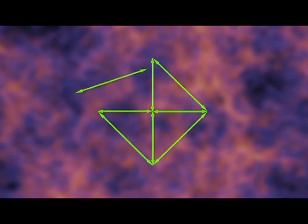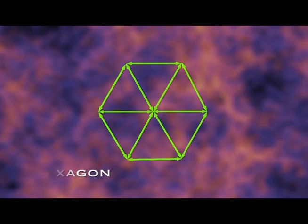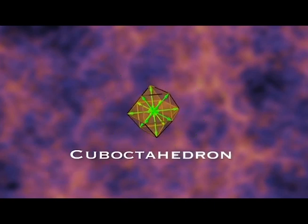Fuller realized that the edge vectors and the vectors to the center have to be the same distance. This creates a hexagon, or in three dimensions, a cuboctahedron or vector equilibrium.